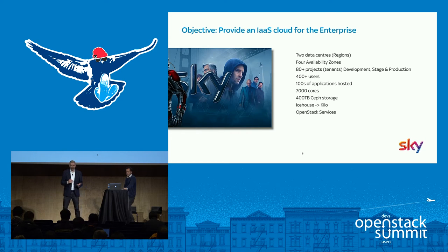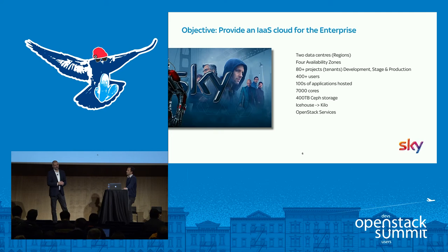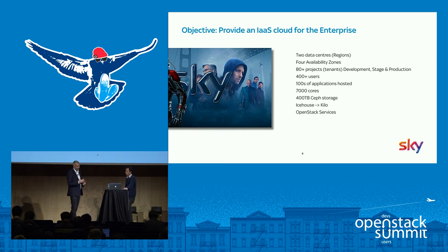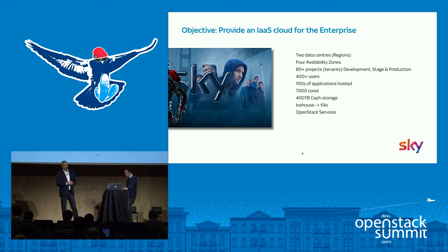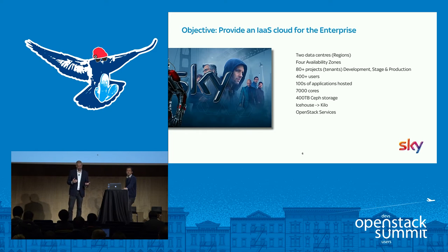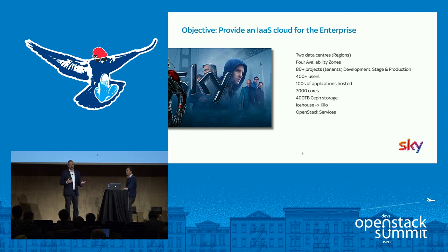We initially deployed IceHouse a couple of years ago and went through an upgrade to Kilo earlier in the year. From an end-user perspective, they see Nova, Cinder, Glance, and Keystone services. Cinder presents through Ceph storage, and we use Rados Gateway for object storage. We have Neutron with both provider-type VLAN and provider-type overlay networks. We also have Heat and Ceilometer, so users can combine those to do auto-scaling.